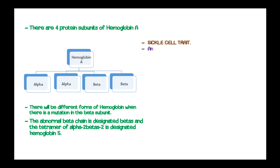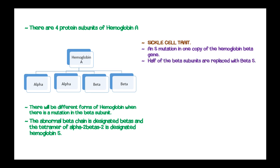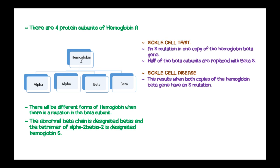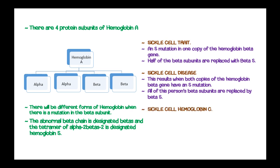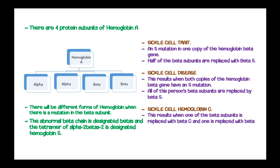In sickle cell trait, an S mutation in one copy of the hemoglobin beta gene occurs, and half of the beta subunits are replaced with the beta-S gene. In sickle cell disease, both copies of the hemoglobin beta gene have an S mutation, and all beta subunits are replaced by beta-S. In sickle cell hemoglobin C, one beta subunit is replaced with beta-C and one is replaced with beta-S.